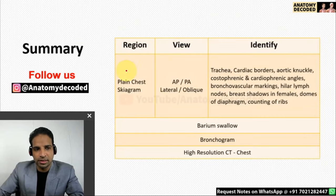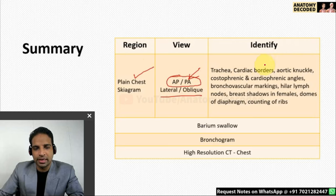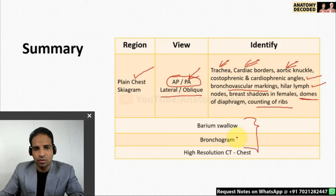Let us summarize what we have covered. We covered the plain chest skygram in detail — AP and PA views, with PA view being most frequently asked. Then lateral and oblique views. In any chest skygram you should be able to identify the trachea, the various cardiac borders, aortic knuckle, the two angles — cardiophrenic and costophrenic — bronchovascular markings, hilar lymph nodes if present, breast shadows in females, the two domes of the diaphragm, and be able to count the ribs. Then contrast skygrams: barium swallow, bronchogram, and the latest technique — CT scan.